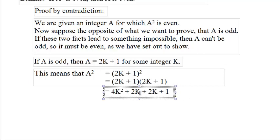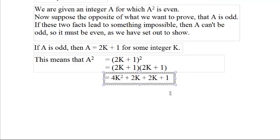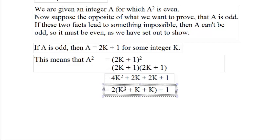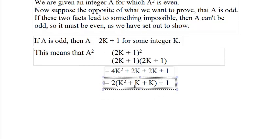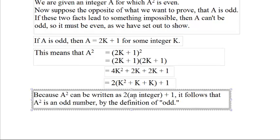We get 4k squared plus 2k plus 2k plus 1. Now this, the first three, we could factor a two out from each of those. 2 times k squared plus k plus k plus 1. And that is 2 times an integer plus 1. If it's 2 times an integer plus 1, it's odd. And therefore, a squared is an odd number.